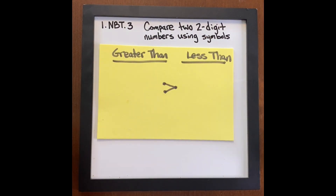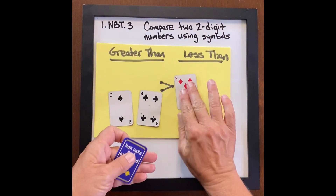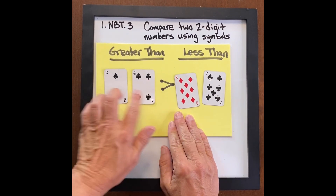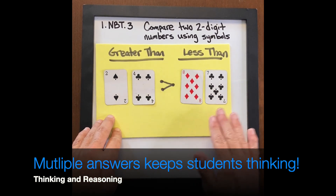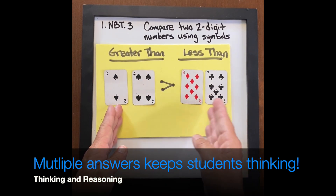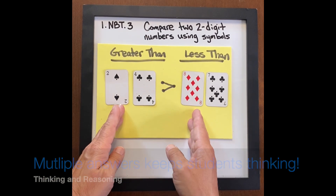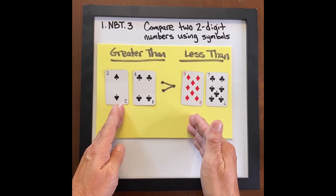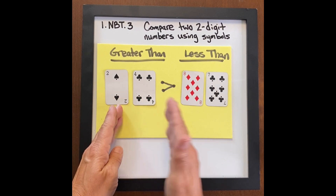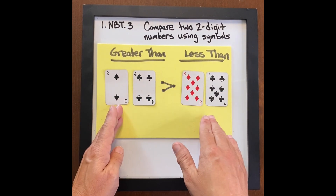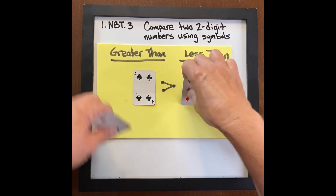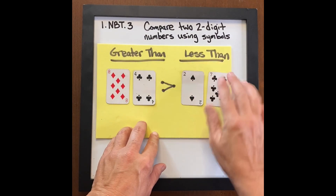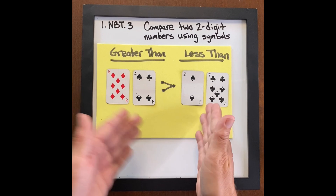Now for two-digit numbers, I'm going to turn over two cards. I'll ask students: is 24 greater than 87? Is that true? It is not true. We ask why — because 24 has only two tens and 87 has eight tens. So I change my question: how can we move these digits around so that we have a number that's greater than or less than? Students may simply say, switch the tens.